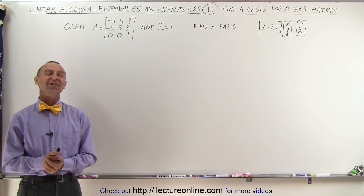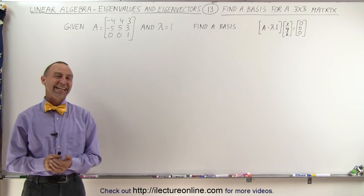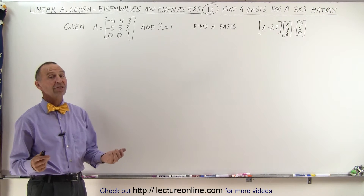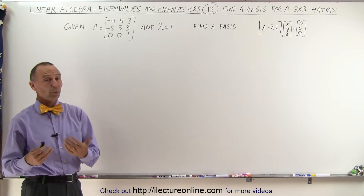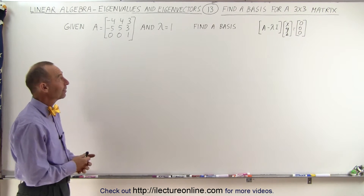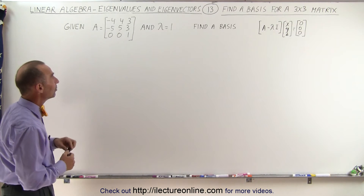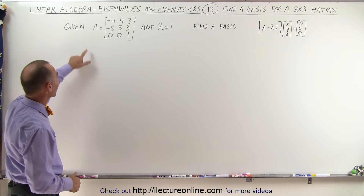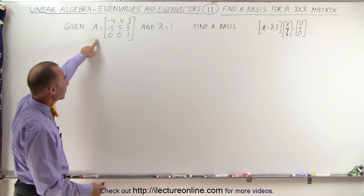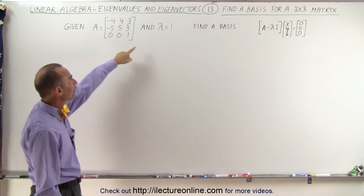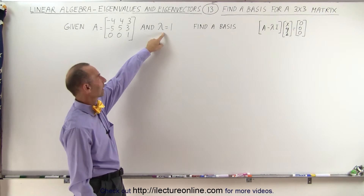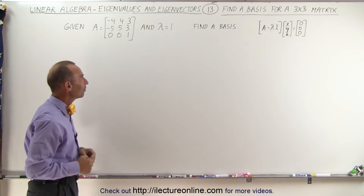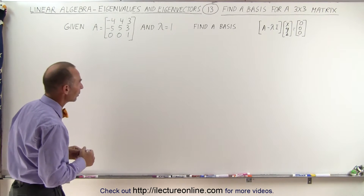Welcome to iLecture Online. In this video, we're going to see that a basis can actually contain more than one eigenvector. Let's go ahead and try to find the eigenvectors of this particular matrix. It's a 3 by 3 matrix, and we're given one of the eigenvalues, so it needs to be associated to the eigenvalue lambda equals 1.